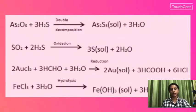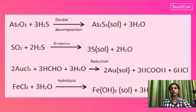The fourth chemical method is hydrolysis: ferric chloride undergoes hydrolysis to produce ferric hydroxide sol. These are the chemical methods for preparation of colloids.